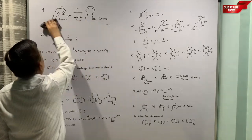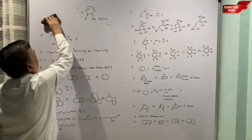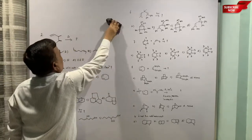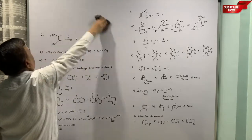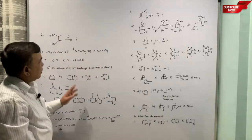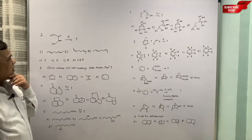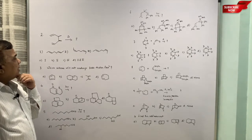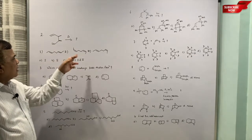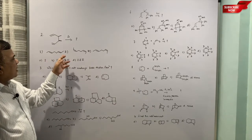Because according to the Woodward-Hoffman rule, the ring closure has to be photochemical and that has to be conrotatory so that trans substituents would remain trans in the product. Okay, now moving on to second question.